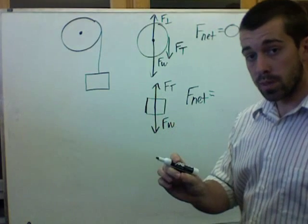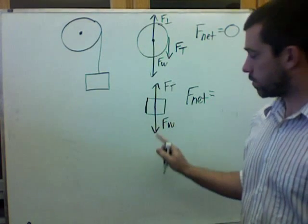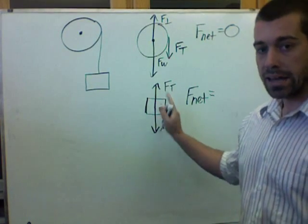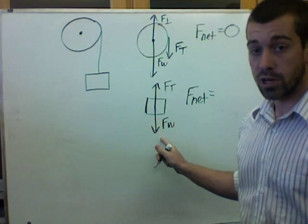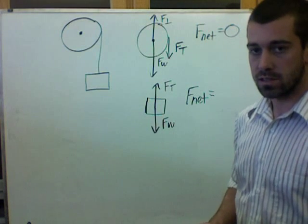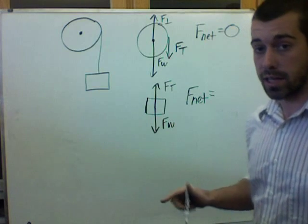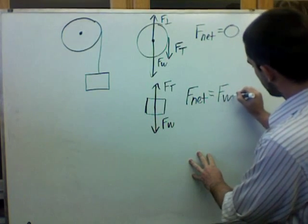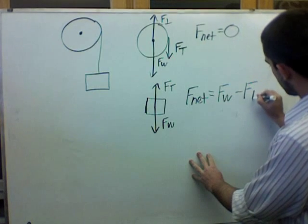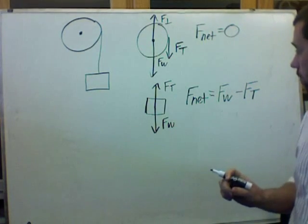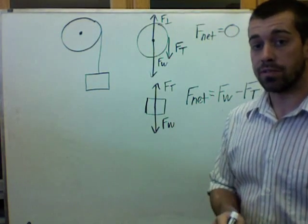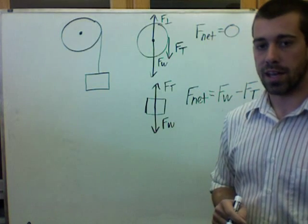is going to be determined by the difference between the force of weight and the force of tension. So, if I have force of weight minus force of tension, that will give me the net force on the hanging mass, and that will allow me to figure out the acceleration of the hanging mass.